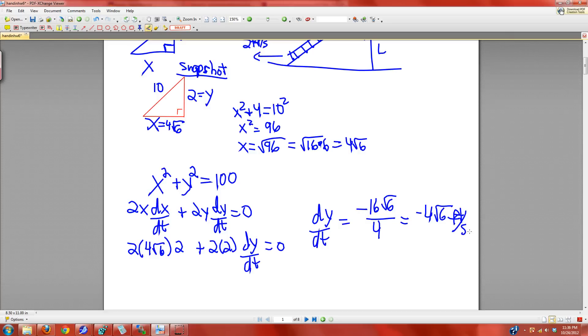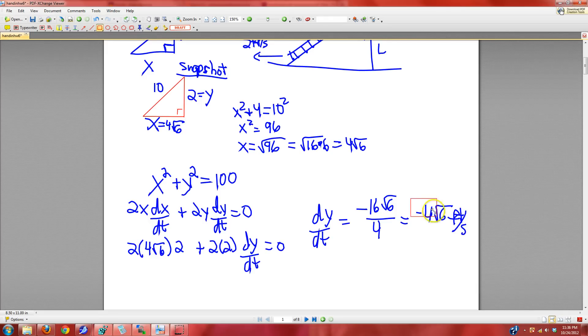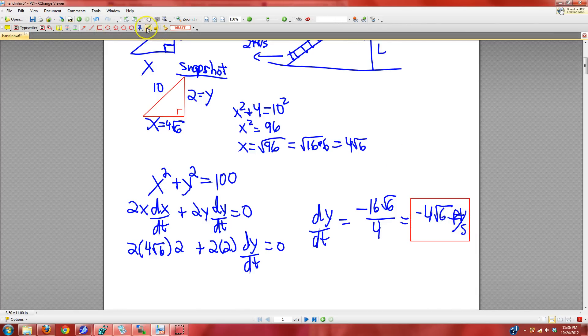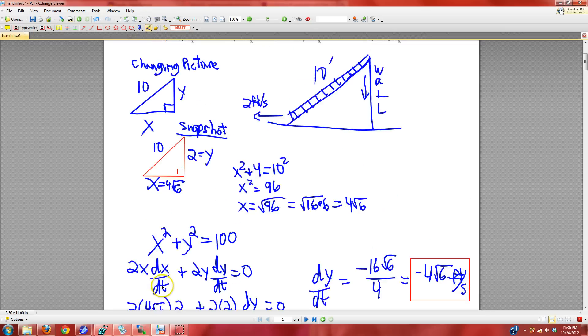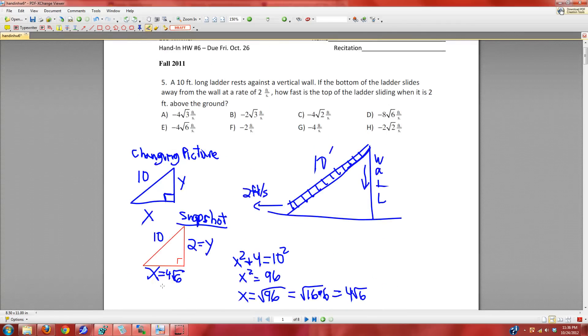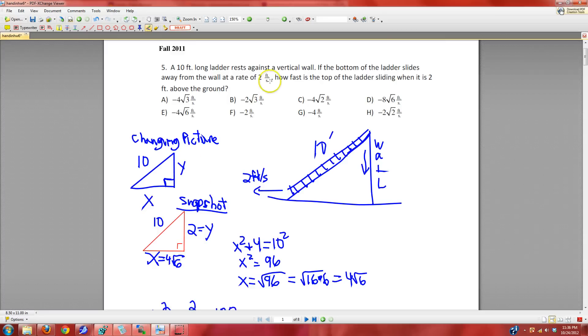That would be the answer. Okay. 10 feet ladder rests against the wall. The bottom of the ladder slides away from the wall at a rate of 2 feet per second.